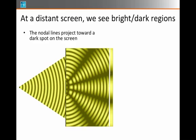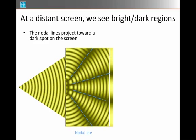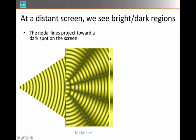The nodal lines, which are those regions which are dark, and I've outlined them right there, all the nodal lines project outward toward the screen in such a way that they line up. And so there's a region that's dark on the screen and another region that's dark on the screen.